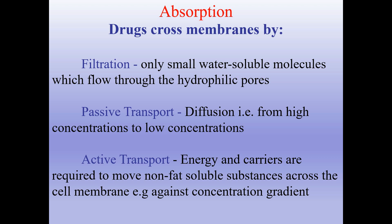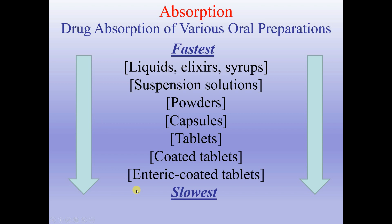Not only the fraction of the administered dose that gets absorbed, but also the rate of absorption is important. To be effective, a drug must be absorbed except for topical and IV routes of administration. This means drugs have to cross cell membranes. The ability of the drug to cross the cell membrane is influenced by its solubility in water or fat, and its size and shape. Drugs cross cell membranes by filtration — only small water-soluble molecules which flow through the hydrophilic pores; passive transport — diffusion from high to low concentrations; and active transport — energy and carriers are required to move non-fat-soluble substances across the cell membrane, for example against a concentration gradient. On this slide you can see examples of different oral preparations and their speed of absorption, from the fastest — liquids, elixirs and syrups — to the slowest — enteric coated tablets.